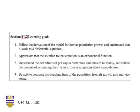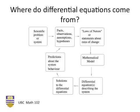Our learning goals will be first to follow the derivation of the model for human population growth and understand that it leads to a differential equation, to appreciate that the solution to that equation is an exponential function, and to understand how birth rates and death rates of mortality enter into that equation. And finally, to be able to compute the doubling time of that population from its growth rate.